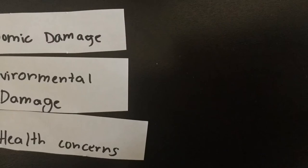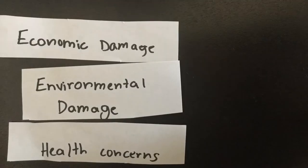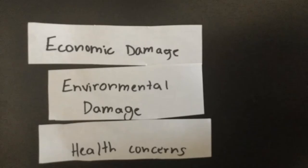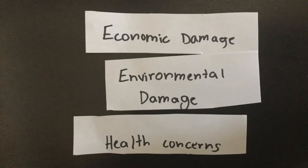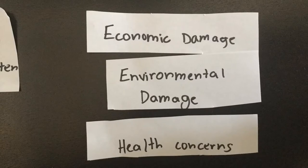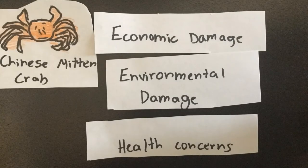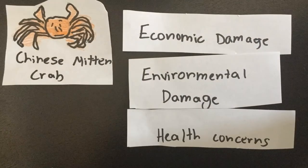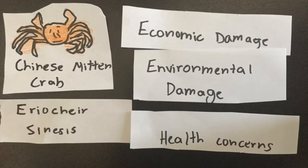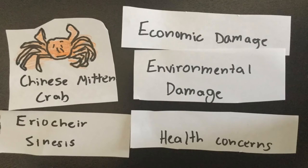The Chinese mitten crabs have caused a wide variety of damage to the US and Europe. They cause damage to stream banks and increase erosion, which can cause collapse of flood control and water supply systems. Chinese mitten crabs also compete with native species for food, killing off many in the process, and they prey upon native species including fish eggs.